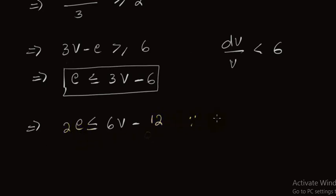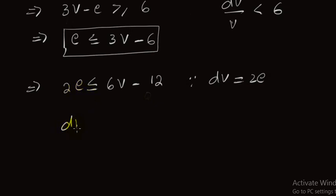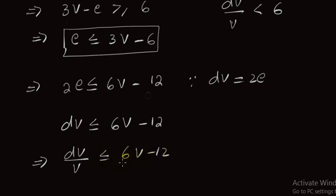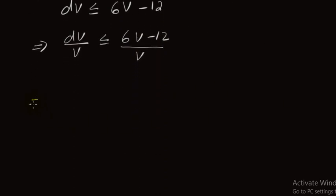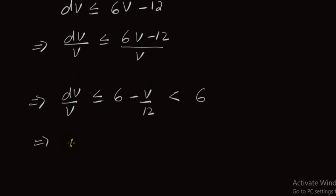As we know that the sum of dv equals 2e, I can replace 2e by the sum of dv. So the sum of dv is less than or equal to 6v minus 12. Dividing both sides by v: dv over v is less than or equal to 6 minus 12 over v. This is clearly less than 6. So we have proved that the average degree dv over v is less than 6.